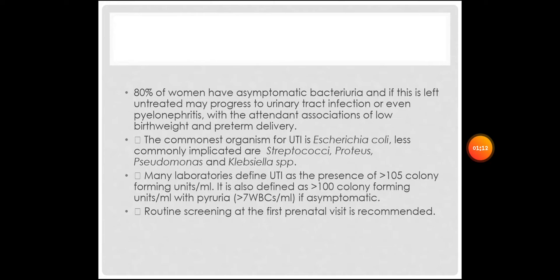The commonest organism for UTI is E. coli. Less commonly implicated are Streptococcus, Proteus, Pseudomonas, and Klebsiella species. Many labs define UTI as the presence of greater than 10^5 colony forming units per mL. It is also defined as greater than 100 colony forming units per mL with pyuria, which refers to greater than 7 white blood cells per mL.